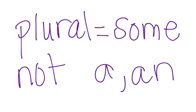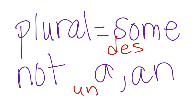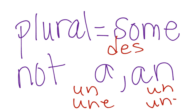Remember that plural means 'some,' not 'a' or 'an.' So when something is plural, you use des with it, not 'a' or 'an.' And both 'a' and 'an' in English correspond to either un or une in French, because we have different ways of determining when to use those.